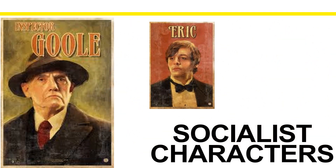In An Inspector Calls, the principal socialist character is Inspector Goole, and some people say that he symbolises socialism. He is there to question the Burling family, but also the audience, about how their actions have impacted Eva Smith and other working class people — and that they have consequences beyond their understanding of how much of an impact they are having on these people's lives. He reminds us that we are, quote, 'members of one body, we are responsible for one another.' These are all socialist ideals — the idea of being connected to one another rather than being an individual by yourself, which is what Mr. Burling believes in.